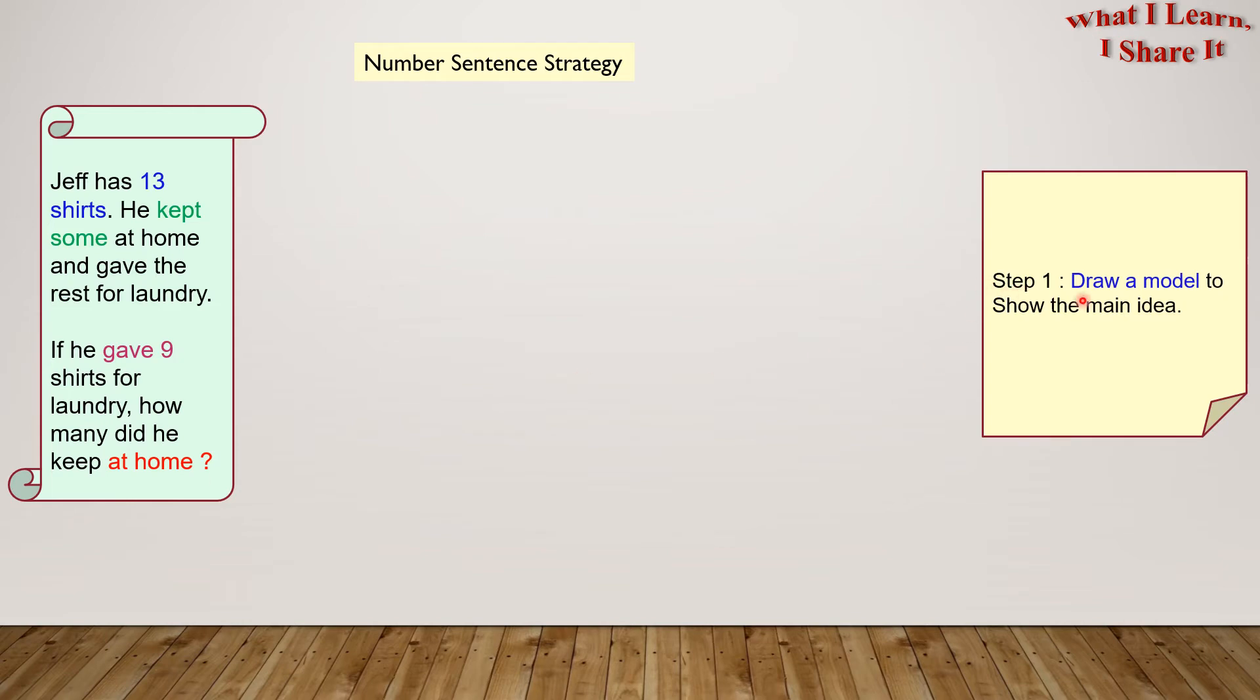Step 1. Draw a model to show the main idea. Jeff has 13 shirts. Here are Jeff's shirts, and there are 13 of them. I've represented this with a rectangle.